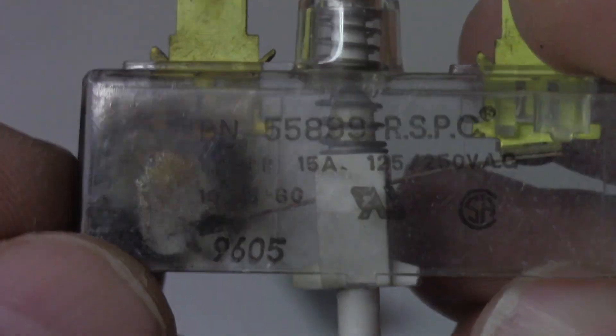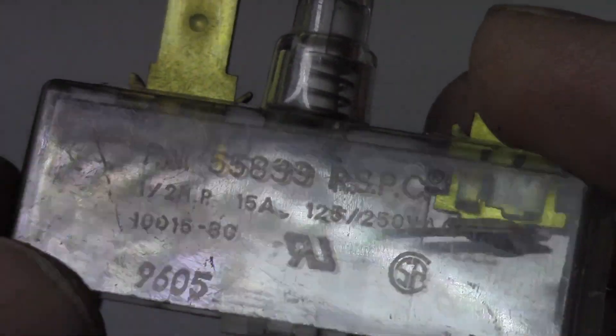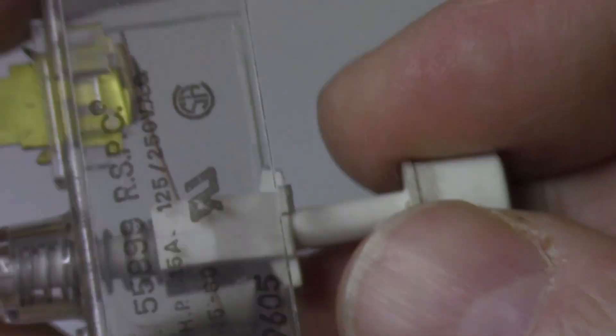The important thing is you want to make sure the amperage of your replacement switch matches the original. This switch is rated for one half horsepower at 15 amps, 125 volts to 250 volts AC. Your switch needs to be compatible with the original specification. You don't want to put a small direct current switch that might be used for automotive. The power and amperage wouldn't be sufficient and the switch would start melting under the current.